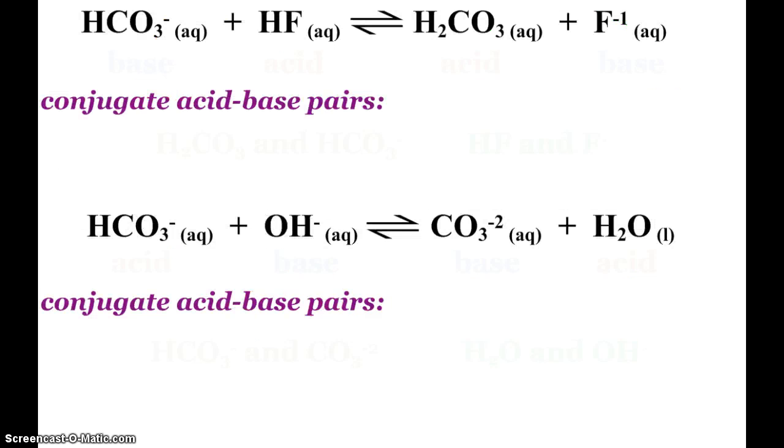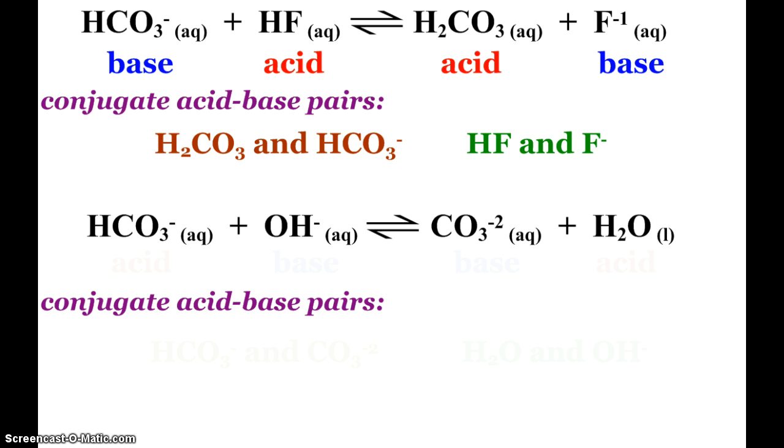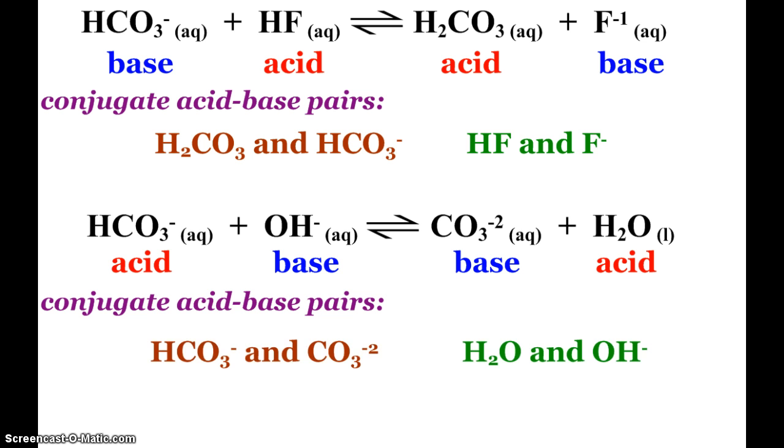So here's a little practice. Look at these two equations. First, determine what's acting as an acid, what's acting as a base, and then see if you can identify the conjugate acid-base pairs. So pause the video and see if you can do that. So our first reaction, hopefully you found that these were our acids and bases. And then our conjugate acid-base pairs are carbonic acid and the bicarbonate ion, and hydrofluoric acid and the fluoride ion. Down here, hopefully you found our acids were water and the bicarbonate ion, base, hydroxide, and carbonate ions. And then our pairs are as such. If you have any questions with that, make sure you see me. But again, you're just pairing up the acids and bases on both sides.